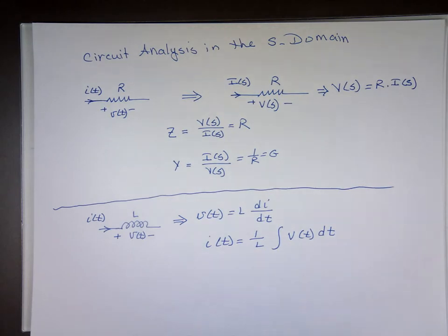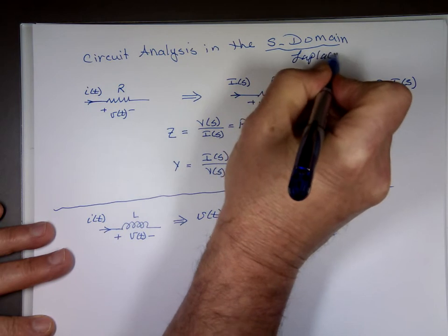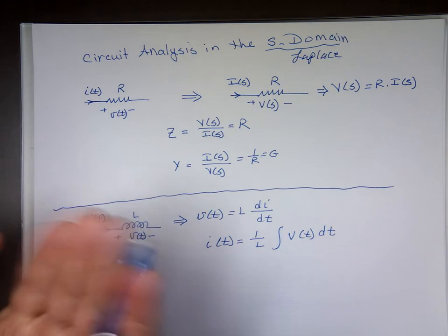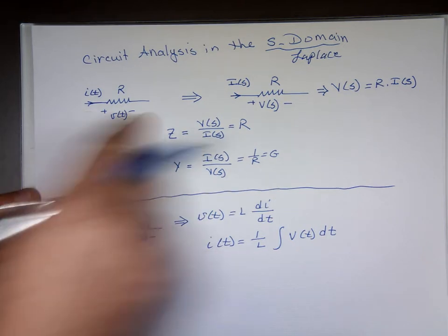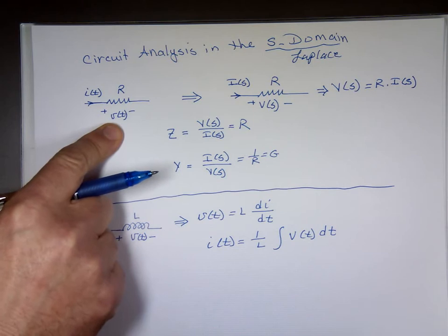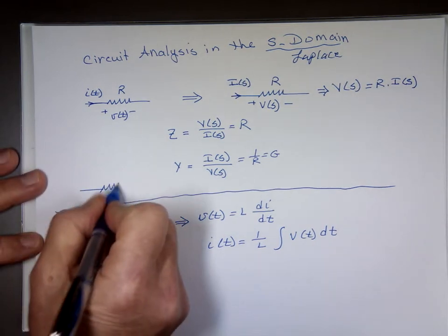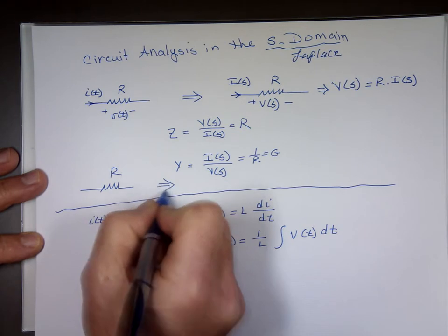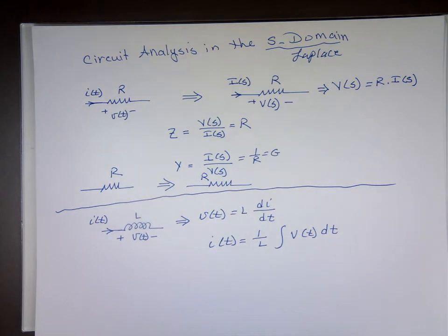I forgot to record this section here, so I'll just go through it with my notes. We tried to find what is the equivalent of the resistor when you switch to the Laplace s-domain. If you go from time domain to Laplace, what do you do with the resistor? Using Ohm's law, V equals IR, the resistor stays the same in the Laplace domain. Its admittance equivalent is just 1 over R.